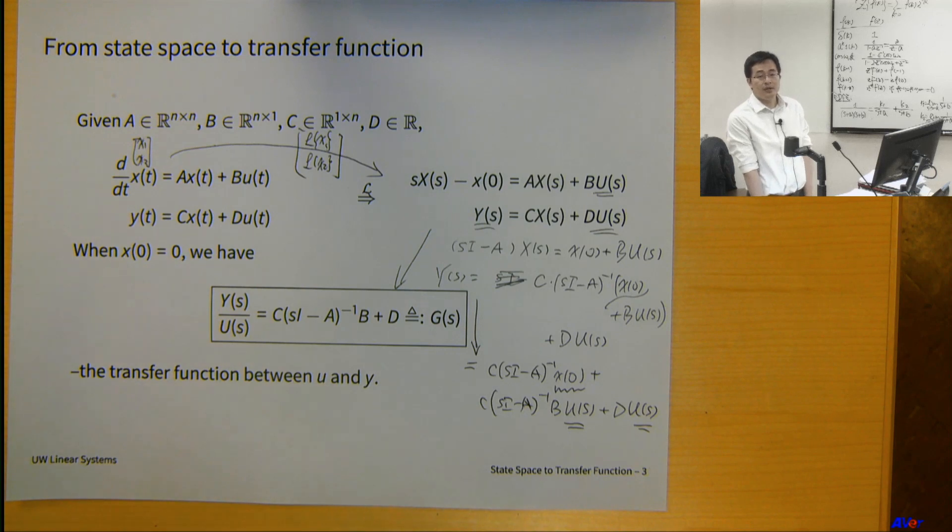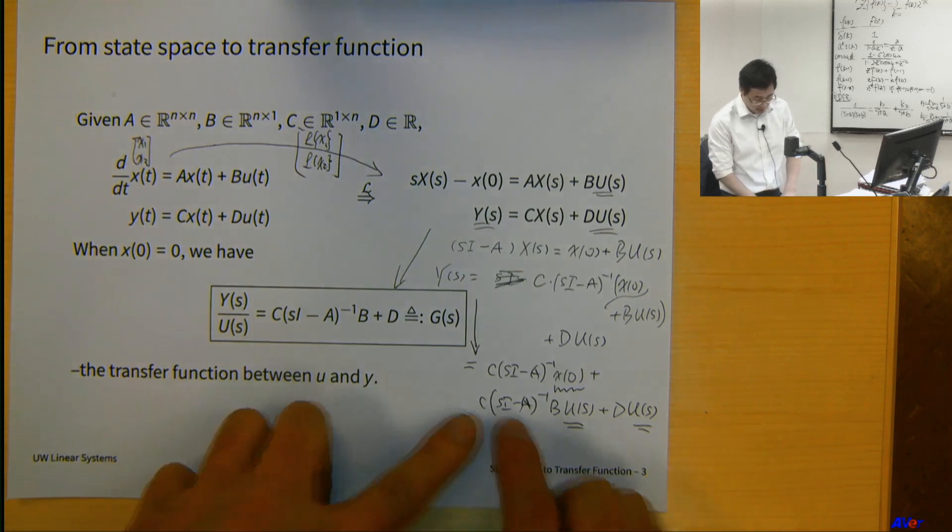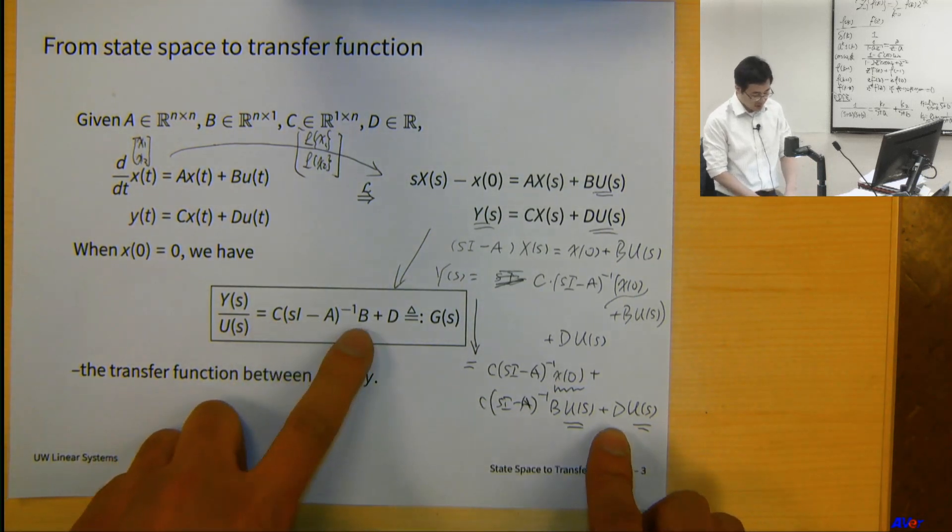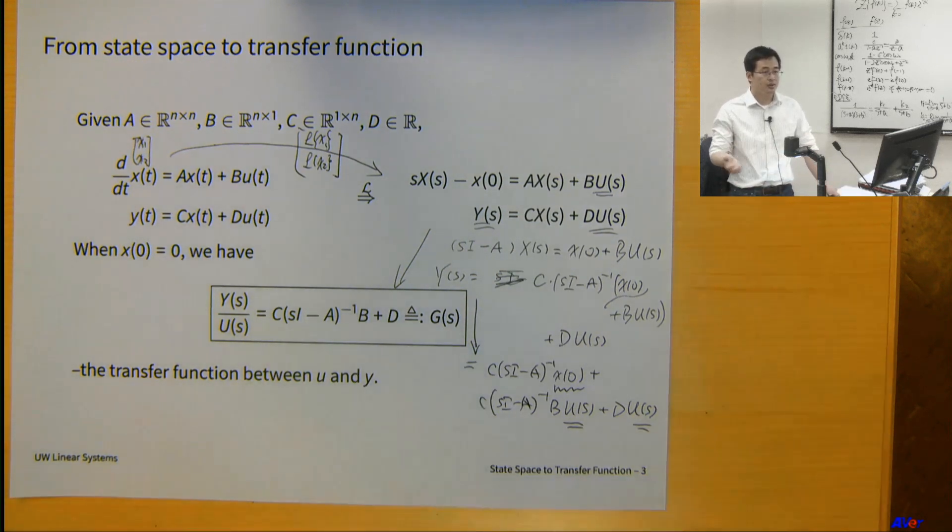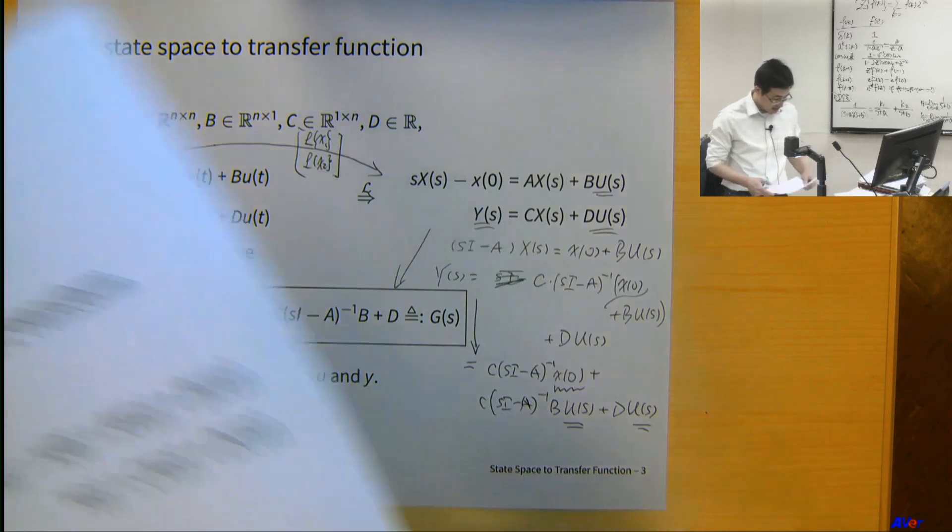Now, if the initial condition is zero, then we have the relationship between y and u, which is C(sI - A)^{-1}B plus D. That's the transfer function. We always let the initial condition to be zero if I just want to know the transfer function between the input and output. The transfer function is describing the relationship between input-output, so it shouldn't depend on the system initial condition. No matter how you start the system, the input-output relationship should not change. This is good for linear systems. For non-linear systems, it's not the case.